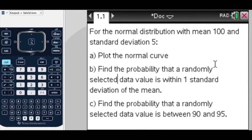First of all, I want to graph a normal curve for a normal distribution that's got a mean of 100 and a standard deviation of 5.